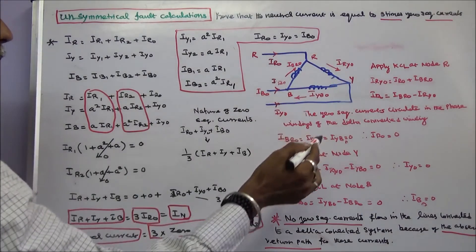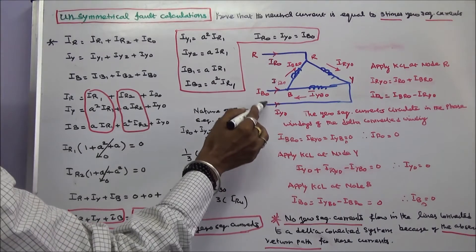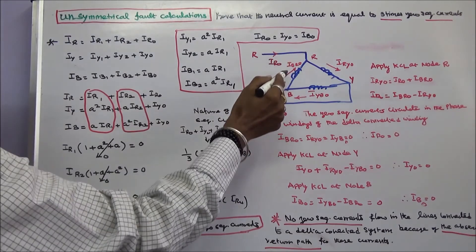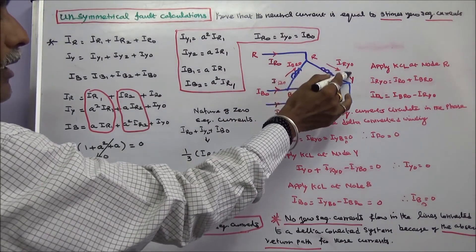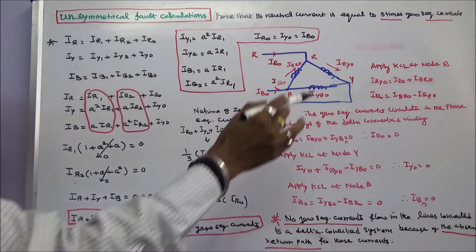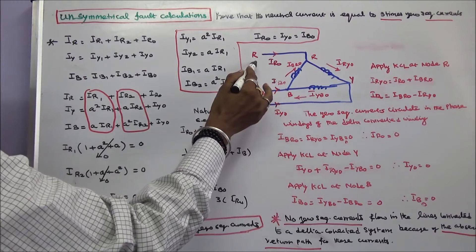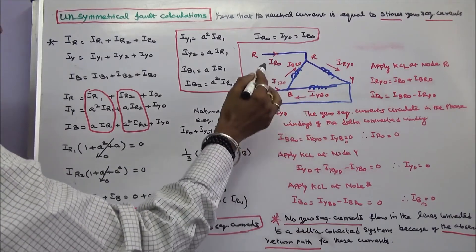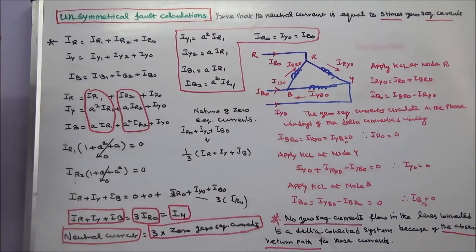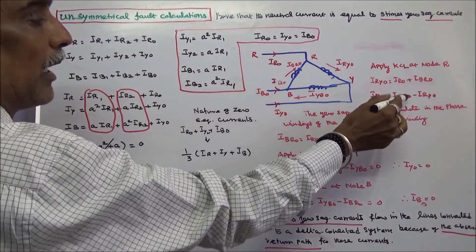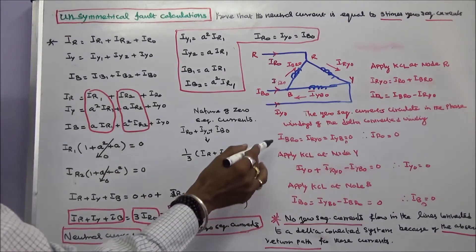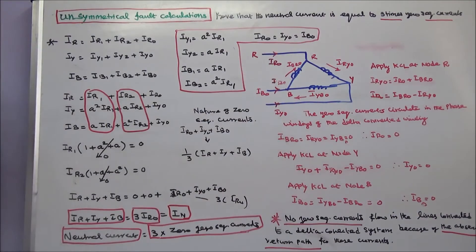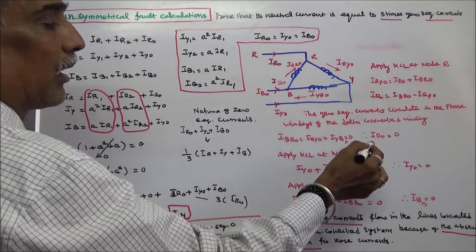Now consider a delta-connected system. The line currents are IR0, IB0, and IY0, and the phase currents include IRY0 and IYB0. Applying Kirchhoff's current law at node R: IRY0 equals current leaving the junction equals current entering, giving IR0 plus IB0. Therefore IR0 is equal to IB0 minus IRY0. Here IB0 equals IRY0 equals IYB0 equals zero, so these terms are zero and IR0 is equal to zero.